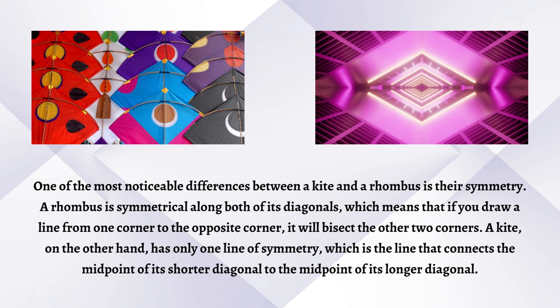A kite, on the other hand, has only one line of symmetry, which is the line that connects the midpoint of its shorter diagonal to the midpoint of its longer diagonal.